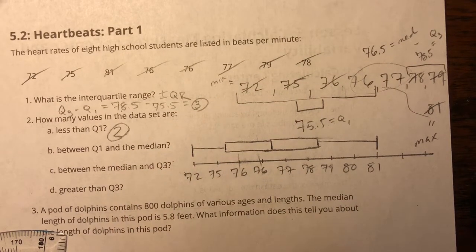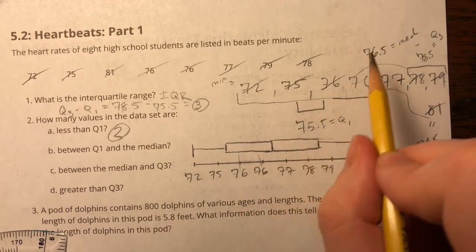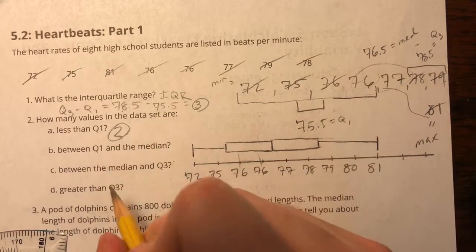Between Q1 and the median. So between 75.5 and 76.5, two values again.